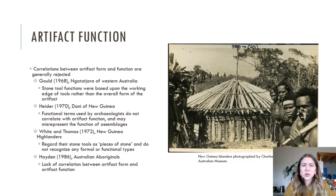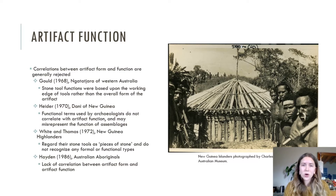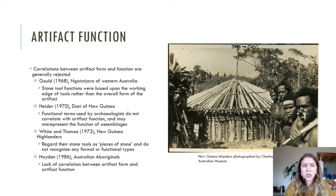One example is Gould's 1968 study of Aboriginal populations in Australia, which ultimately proved that stone tool function was based upon a tool's working edge more so than its overall form. This is supported by White and Thomas's 1972 study, which indicates that New Guinea Highlanders considered their stone tools as simple pieces of stone suitable for a variety of tasks rather than a specific tool form. Overall, such ethnographic studies tend to prove that there is a lack of correlation between artifact form and artifact function exclusivity.